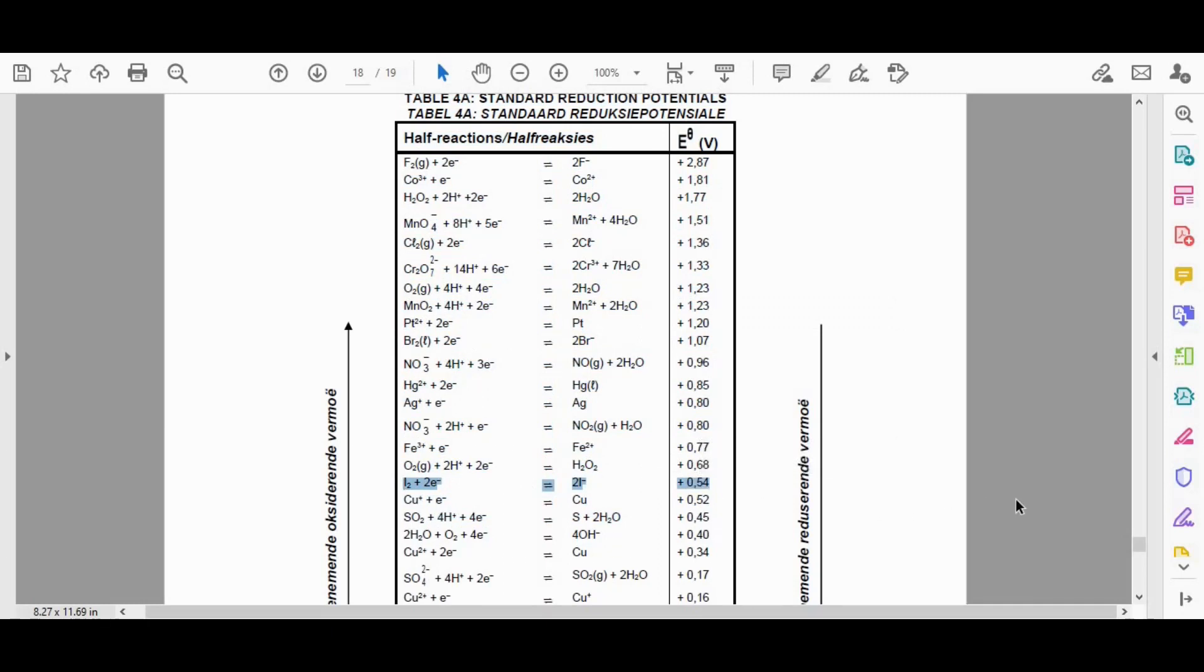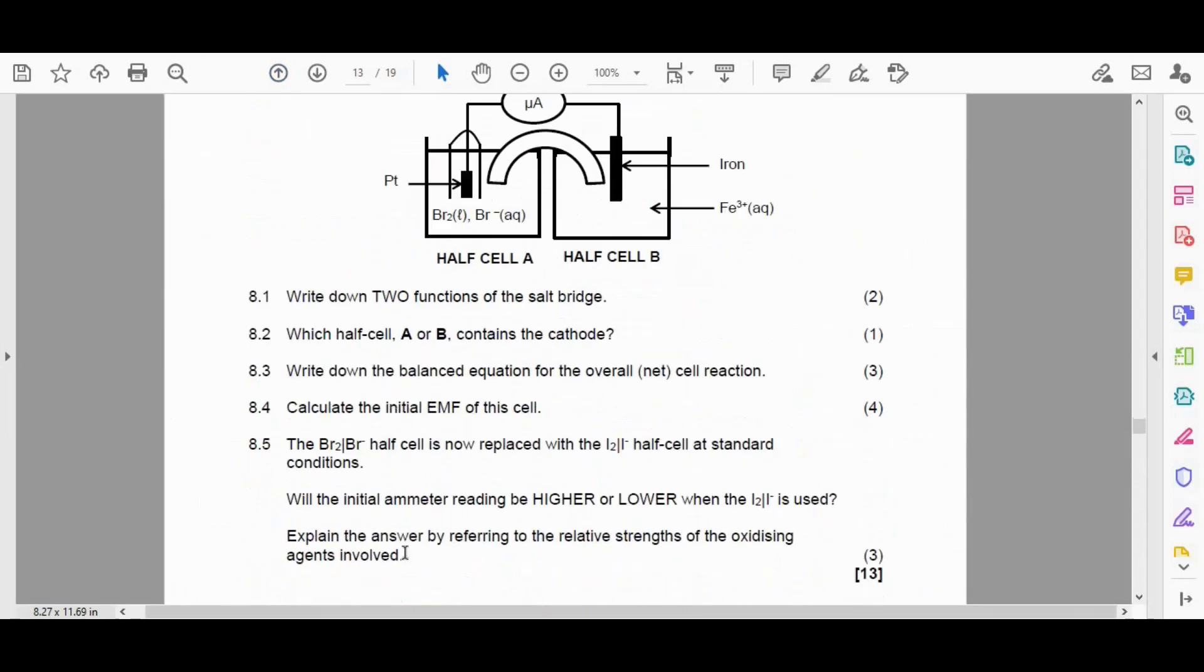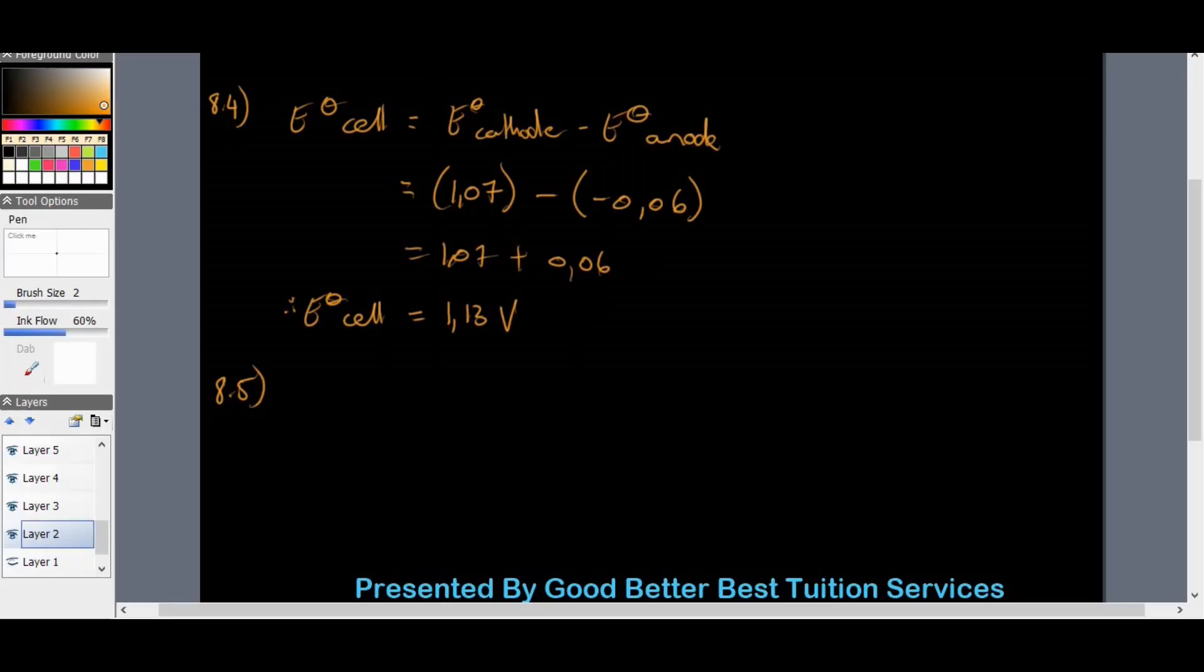We've replaced it with that one, the value of 0.54. And they asked us, will the amateur reading, just to go back to that question, will the initial amateur reading be higher or lower when we employ this cell now instead of the Br2 half cell? And the answer is definitely going to be lower. All right. And why is that?